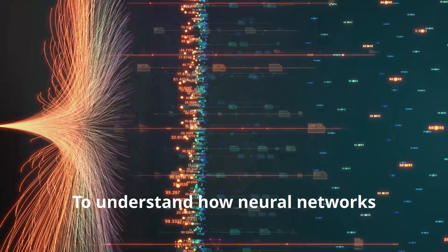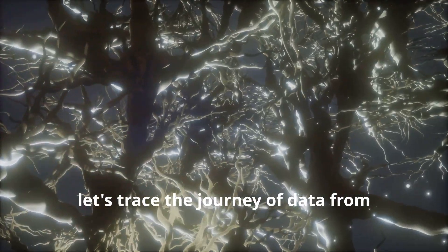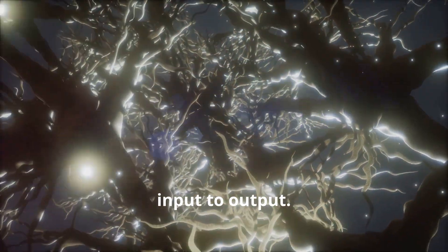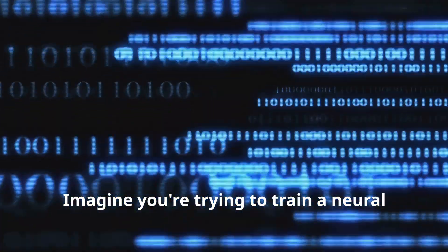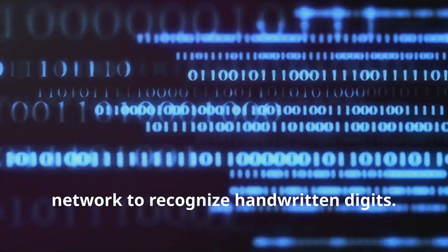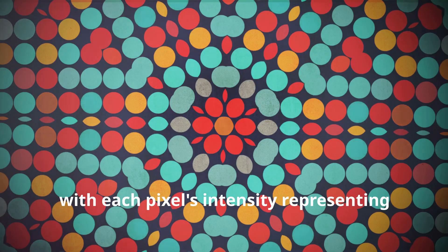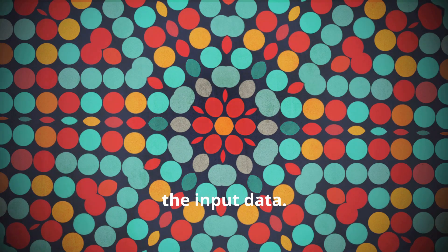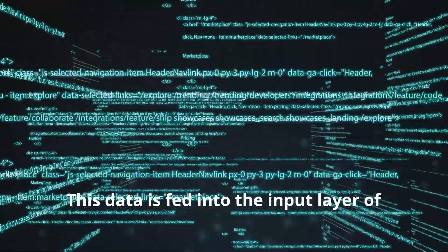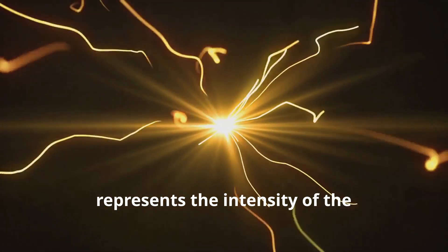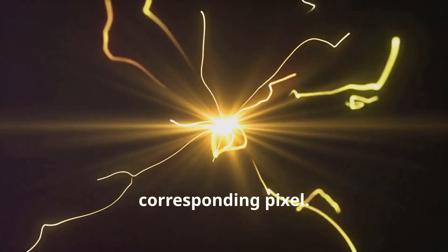To understand how neural networks process information, let's trace the journey of data from input to output. Imagine you're trying to train a neural network to recognize handwritten digits. Each handwritten digit is represented as a grid of pixels, with each pixel's intensity representing the input data. This data is fed into the input layer of the network, where each neuron corresponds to a pixel in the image. The activation of each input neuron represents the intensity of the corresponding pixel.